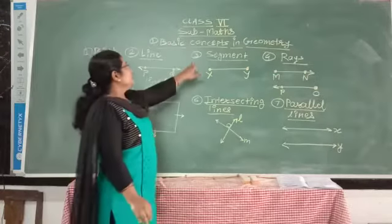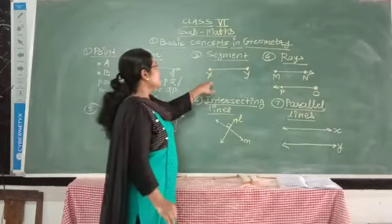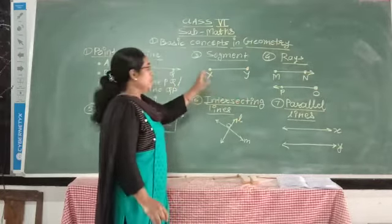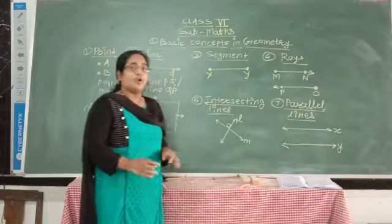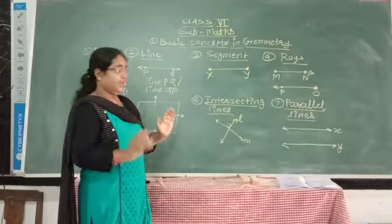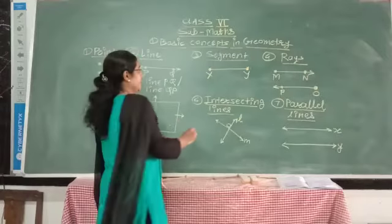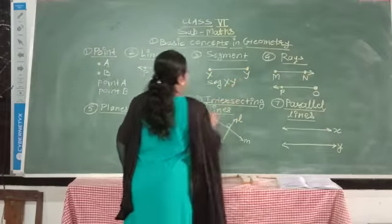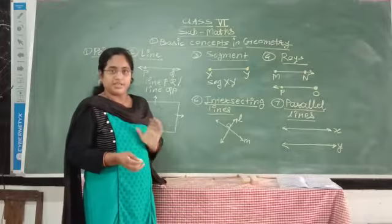The third basic concept in geometry is a segment. In the figure of a segment XY, we see two points at both ends. This means the two endpoints indicate that the segment is limited — it has fixed points on both ends. A segment is read as segment XY, where X and Y should be capital letters of the alphabet.